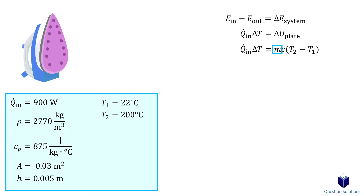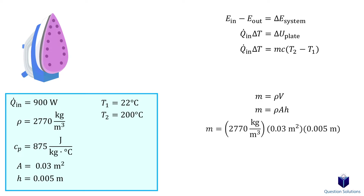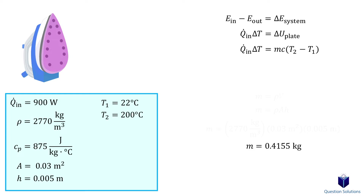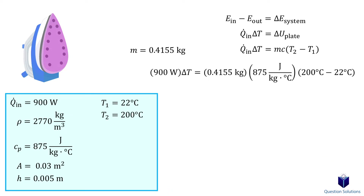We have everything except for mass, so let's figure it out. Mass is equal to density times volume. To figure out the volume of the plate, all we need to do is multiply the surface area by the height. Plugging in our values gives us the mass of the plate. Now we can go back to our equation and plug in our values to solve for t. It took about 72 seconds for the plate to heat up to 200 degrees Celsius.